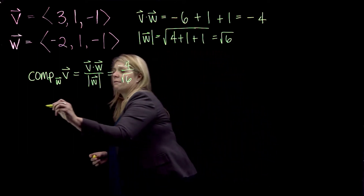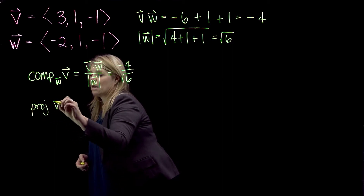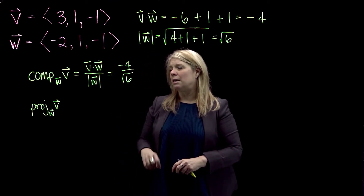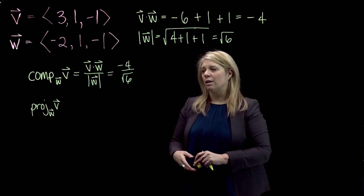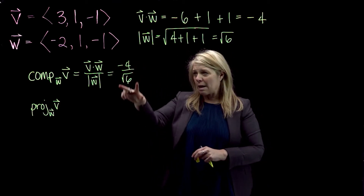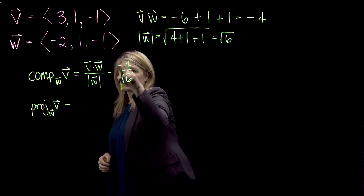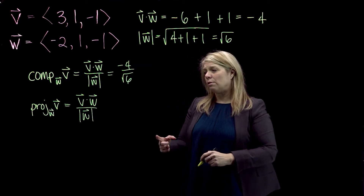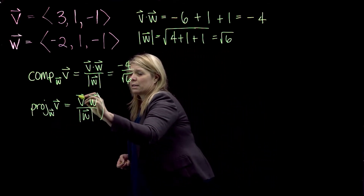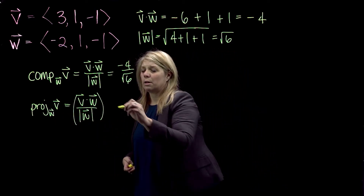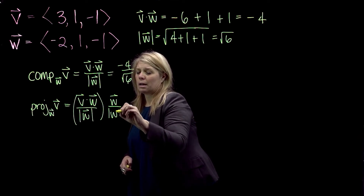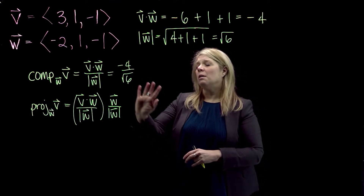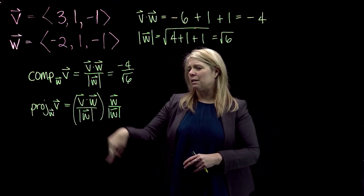The next thing is the vector projection of V onto W. Students often have trouble distinguishing these two: the component of V along W is a scalar quantity, while the projection of V onto W is a vector. To calculate it, take V dot W divided by the magnitude of W, then multiply by a unit vector in the direction of W — that is, W divided by its magnitude.